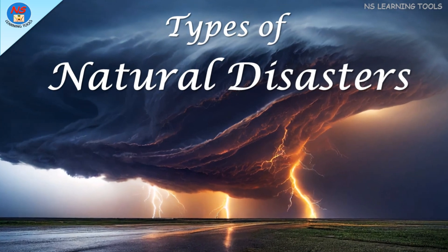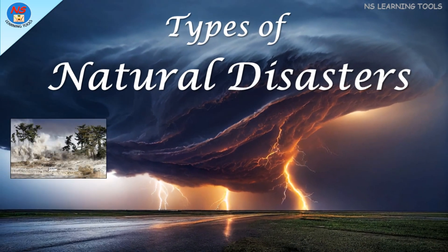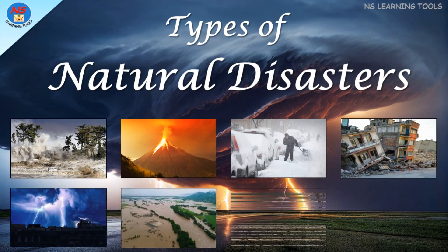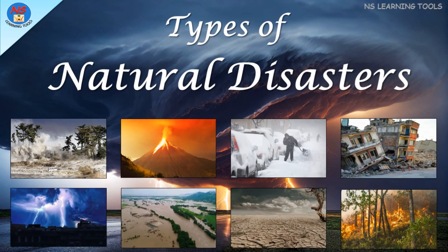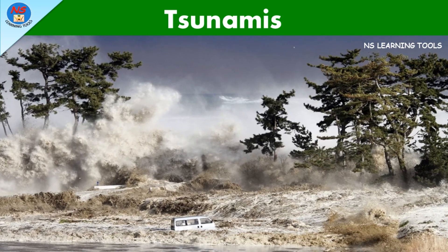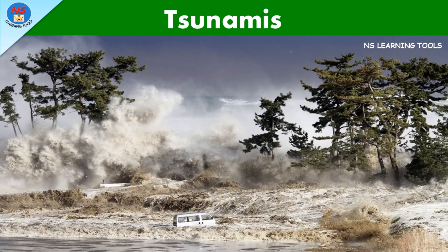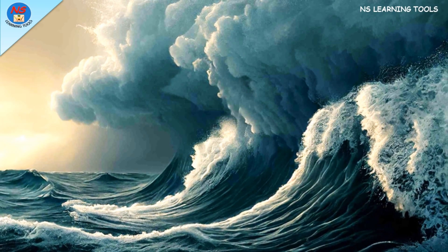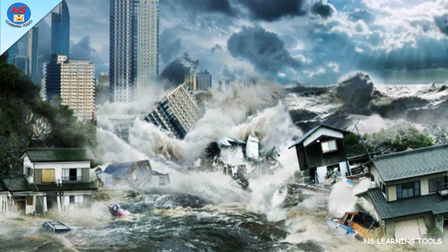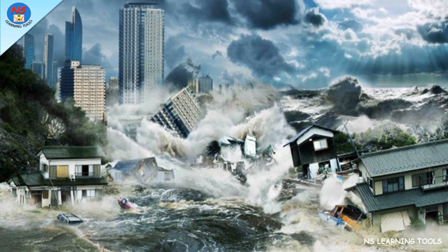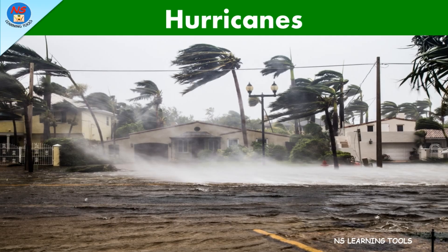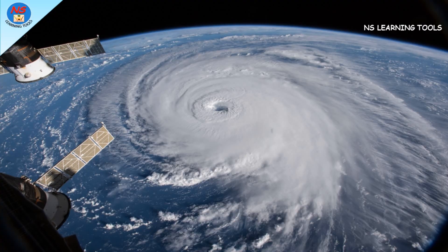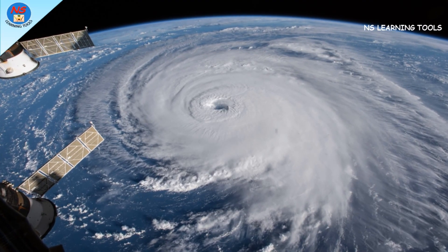Hello friends, how are you? In this video we will see different types of natural disasters. So let's start. Tsunamis are giant waves caused by earthquakes or volcanic eruptions under the sea.